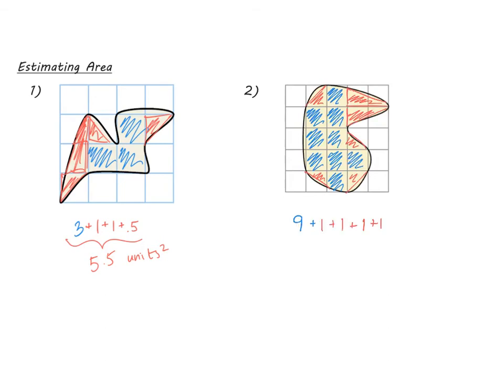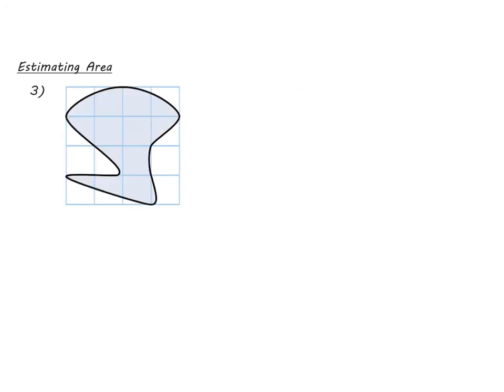Alrighty, so when I did number two I counted up nine full squares and about four pairs of half squares, so that's about eight half squares total. That all adds up to thirteen. So if you got somewhere around thirteen, maybe between like twelve point five and thirteen point five, I think that's a pretty good estimate.